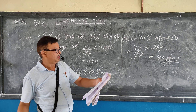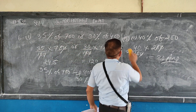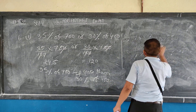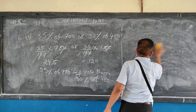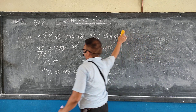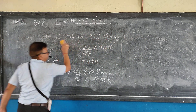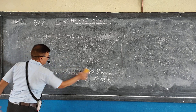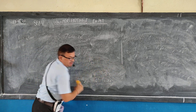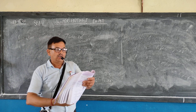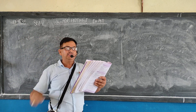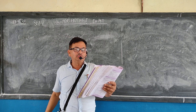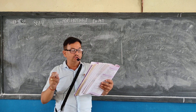Understood? Now some statement problems. Question number 8: the yearly salary of a man is rupees 48,000. He spent 25 percent of his salary on food.